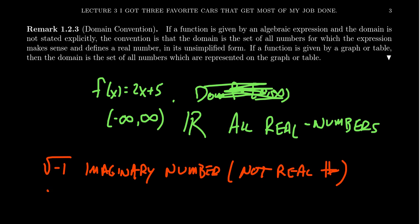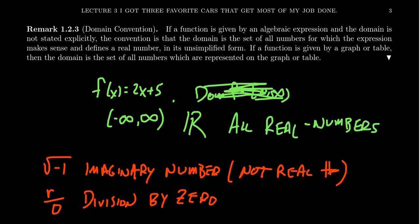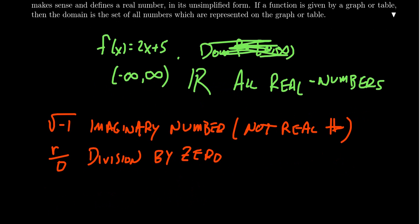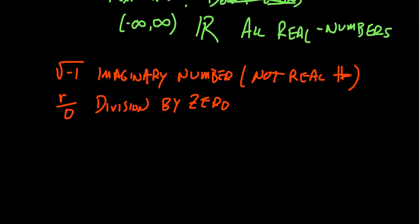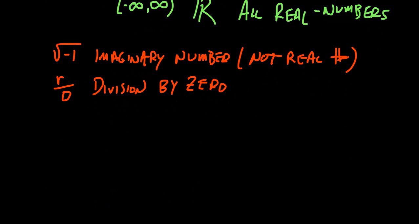Another problem to look out for is division by zero. Unlike imaginary numbers, division by zero really cannot be resolved — the consequences of allowing it are too severe. It would destroy our algebra. We cannot allow division by zero, and here's a short argument for why.